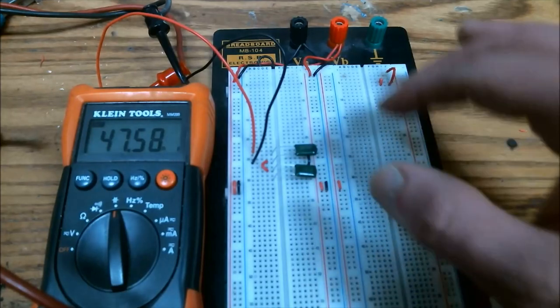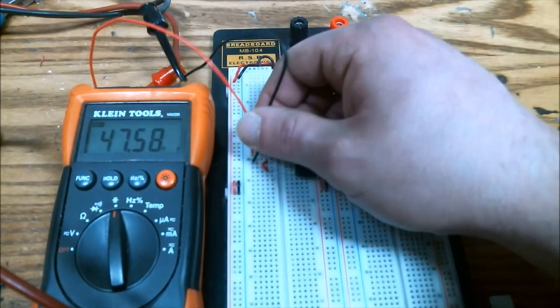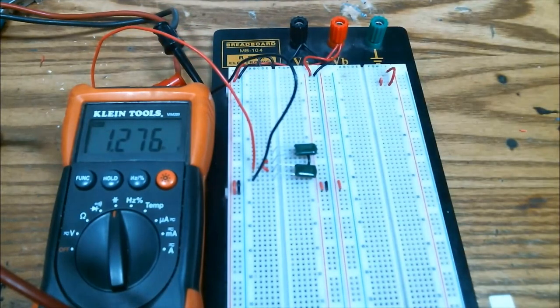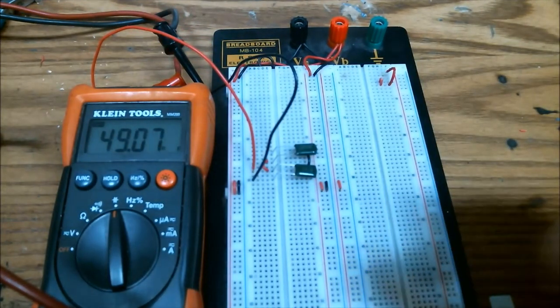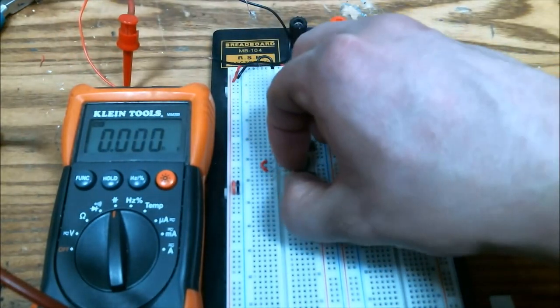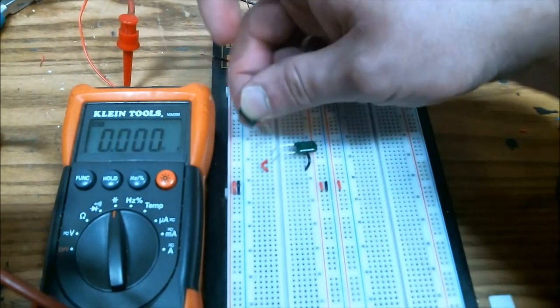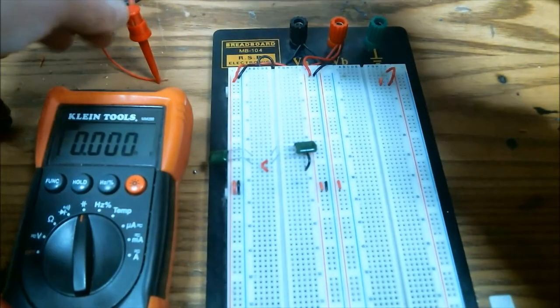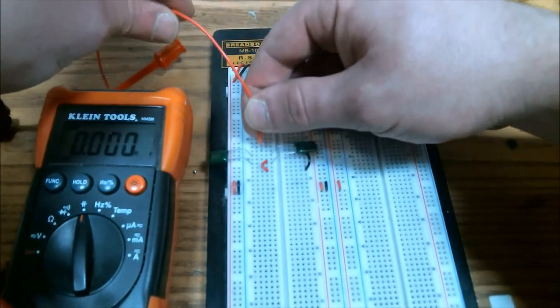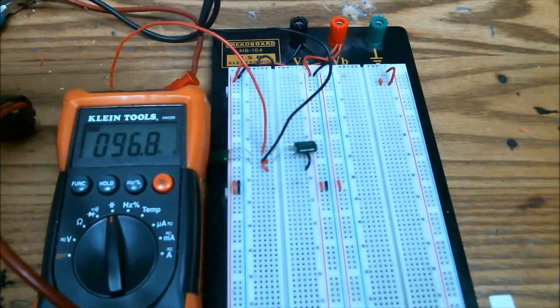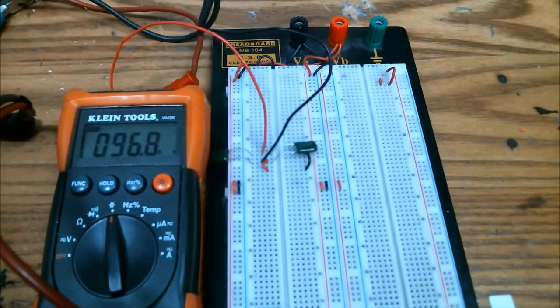Alright, here we are again with the same capacitor. So this one's 47.6 and this one is 49 nanofarads. And if I take the two and I place them in parallel, like so. And I place one lead on this side and the other lead on the other side. And here we are at 96.8. So very close to what I calculated.